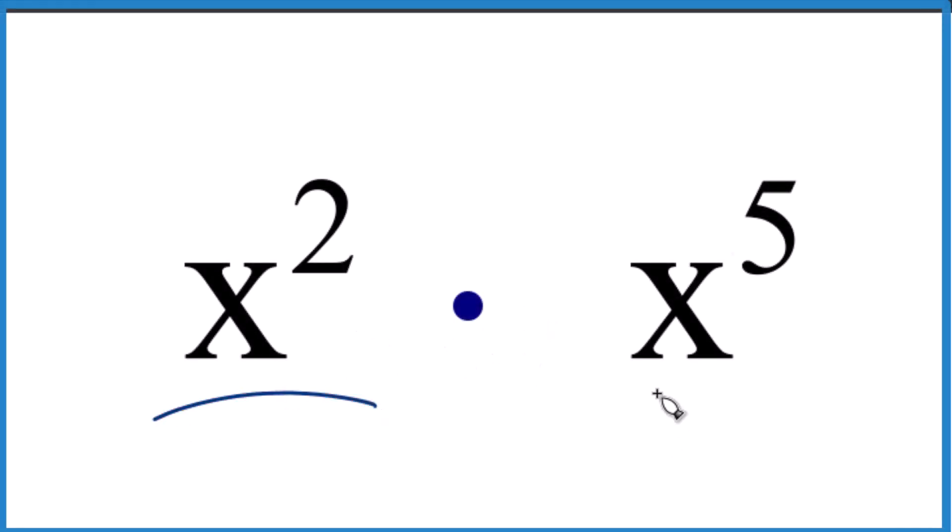Let's multiply x to the second times x to the fifth. So we have x squared times x to the fifth. We want to multiply those together. So here's how we do that.